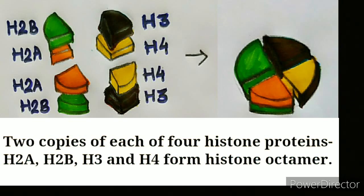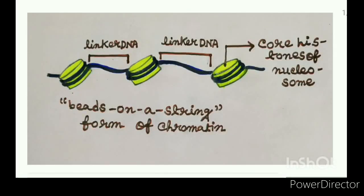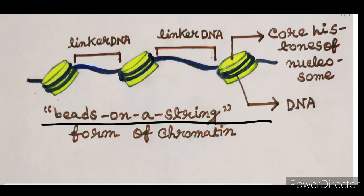The histone octamer contains two copies of each of four histone proteins: H2A, H2B, H3, and H4. The nucleosomes are connected by strands of linker DNA and form the beads on string structure of chromatin.